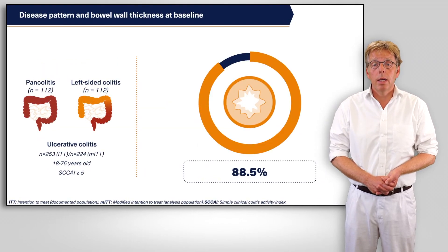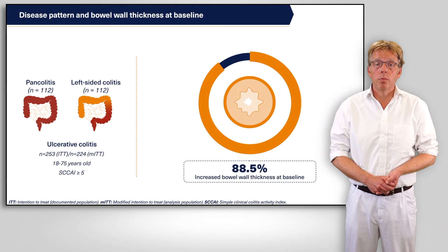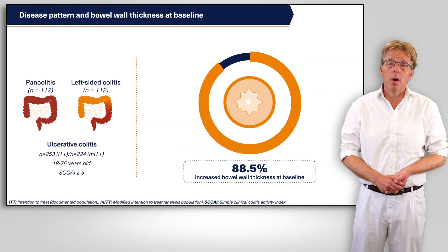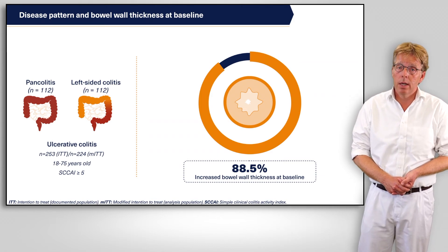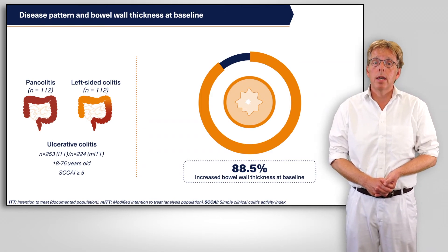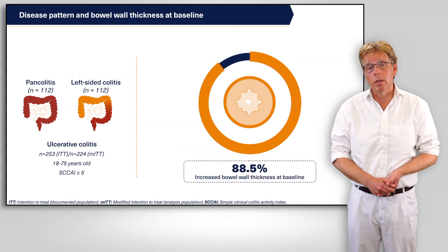Interestingly, 88.5% of the enrolled patients with a clinical flare also had an increased bowel wall thickness at baseline, and this was a much higher rate than expected looking at data from older studies.